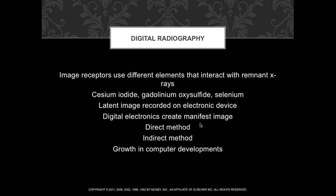In digital radiography, image receptors use different elements that interact with the remnant x-rays — the primary beam goes from the tube to the patient, the remnant beam goes from the patient to the image receptor. Elements used include cesium iodide, gadolinium oxysulfide, and selenium. The latent image is recorded on an electronic device, and digital electronics create the manifested image via direct or indirect methods.